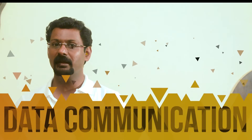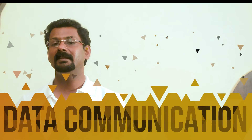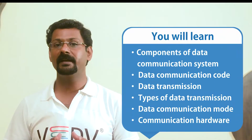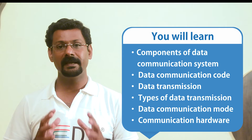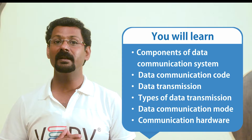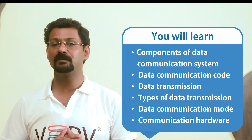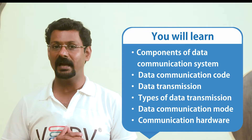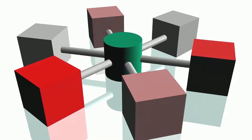Chapter 1: Data Communication. In this chapter you will learn about components of a data communication system, data communication codes, data transmission, types of data transmission, data transmission modes, and communication hardware. Data communication refers to the exchange of data between a source and a receiver. It consists of computers, terminals, and communication links.